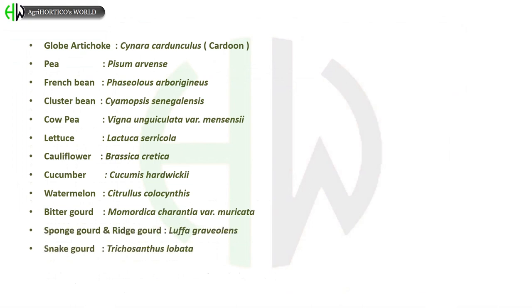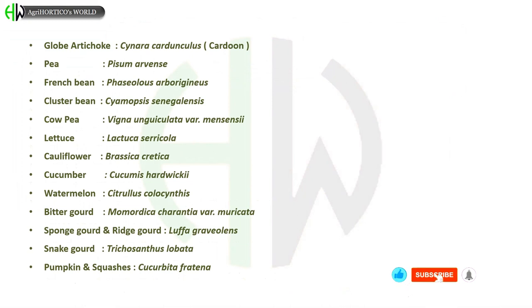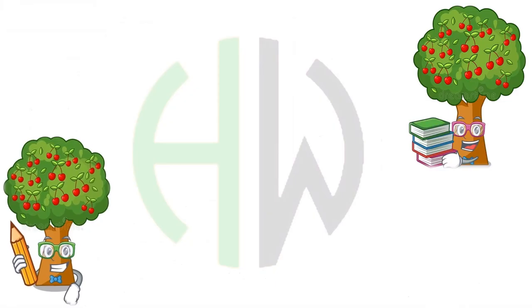Snake gourd – Trichosanthes lobata. Pumpkin and squashes – Cucurbita fraterna. Chinese kale – Brassica cretica subspecies nivea.